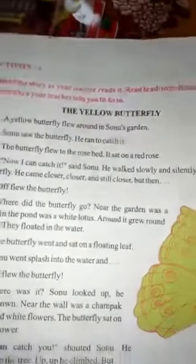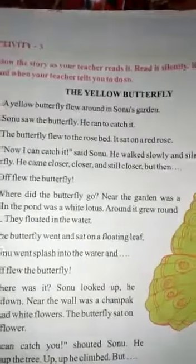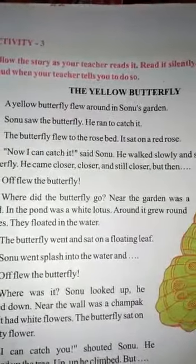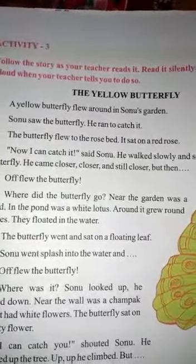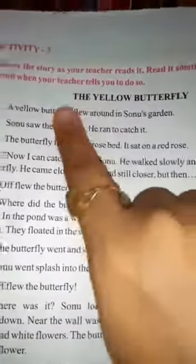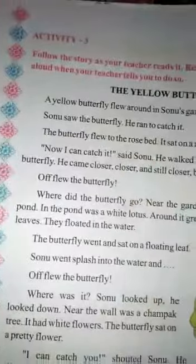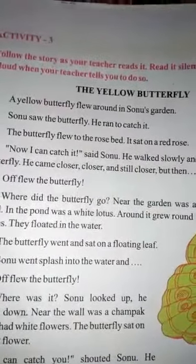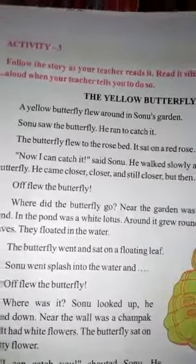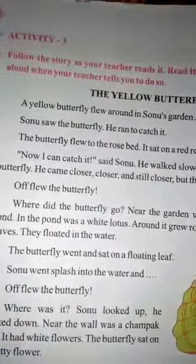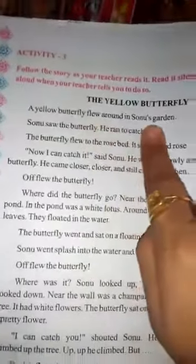Hello students, good morning to all of you. Today in Standard Third, I am going to teach you Activity Three, Chapter One: The Yellow Butterfly. Students, please listen carefully — this story is very good, you will all like it. It's a little child's story about a butterfly. A yellow butterfly flew around in Sonu's garden.